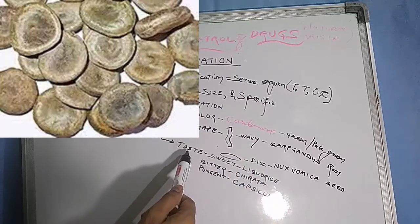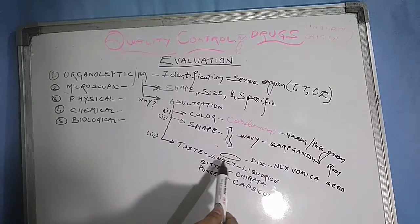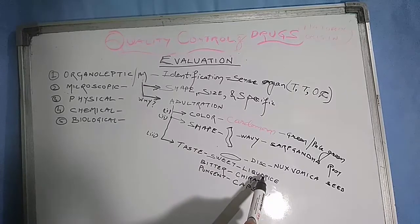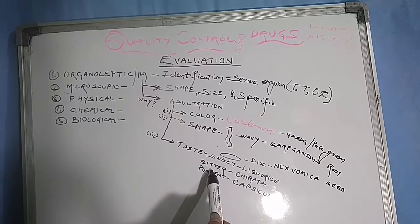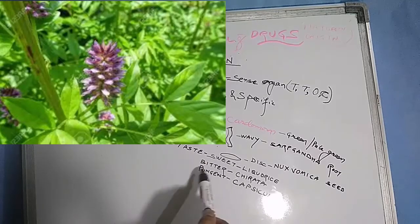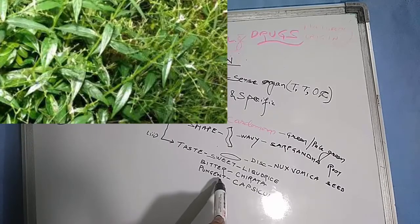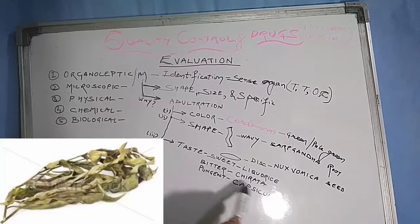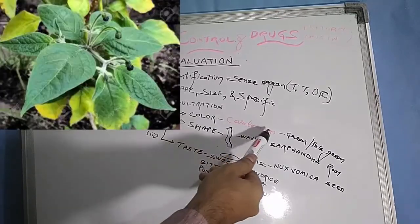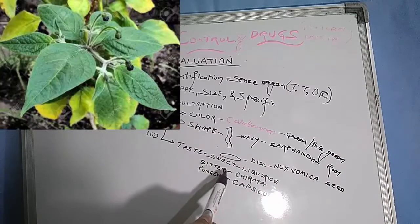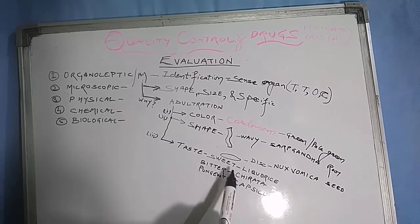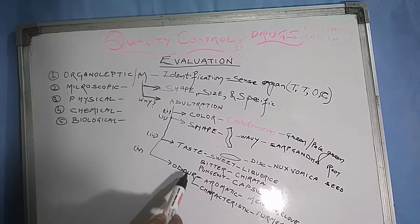Taste can detect adulteration in drugs. Taste refers to sweet taste, bitter taste, or pungent taste. For sweet taste, the best example is licorice. For bitter taste, chirata gives bitter taste. Capsicum seed will be tested as pungent taste. Two examples are sufficient for exams - licorice gives sweet taste and chirata gives bitter taste.